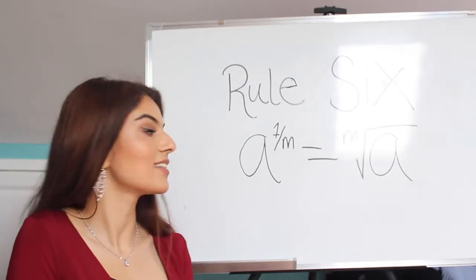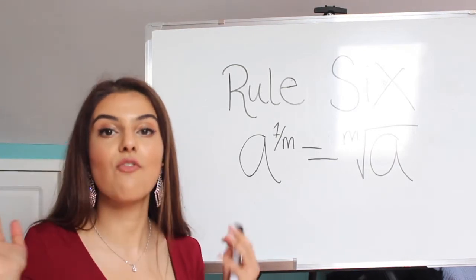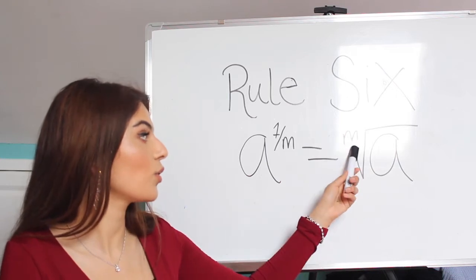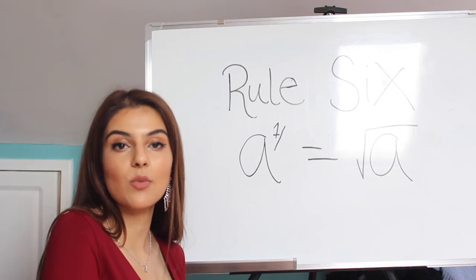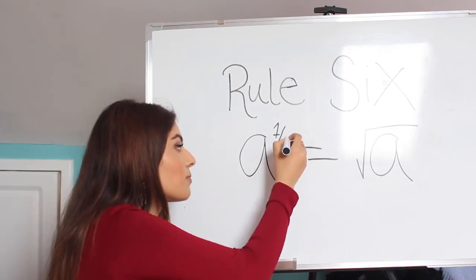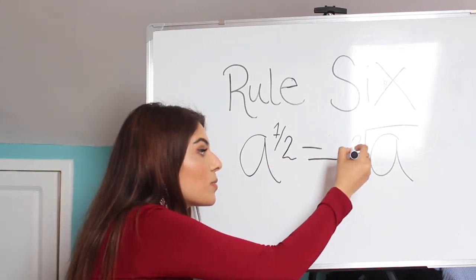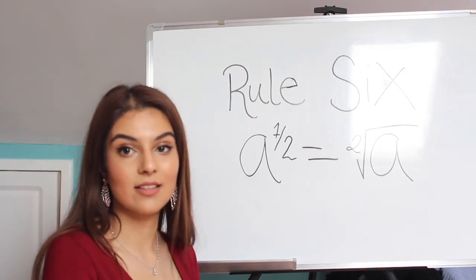The next rule is, if a is ever to the power of a fraction, that fraction turns into a square root. And outside the square root would be the bottom of the fraction. It would mean that if a number or a letter would be to the power of a half, 1 over 2, it would just be square root, 2 would be on the outside, and the a would be on the inside.